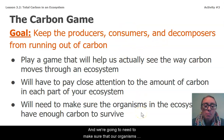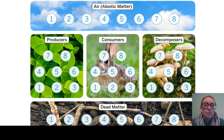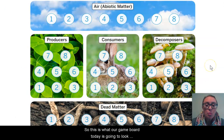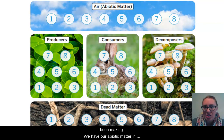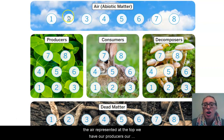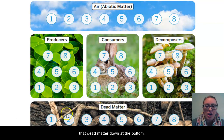We're going to need to make sure that our organisms have enough of this carbon to survive, as carbon is an important atom in those energy storage molecules. This is what our game board today is going to look like, and it's familiar because it reminds me of the sim and the models that we have been making. We have our abiotic matter in the air represented at the top, our producers, consumers, and decomposers in the middle, and then all that dead matter down at the bottom.